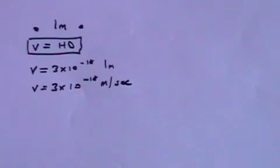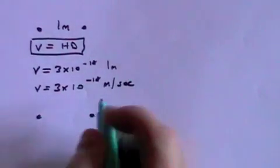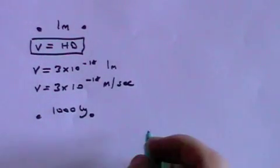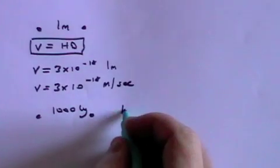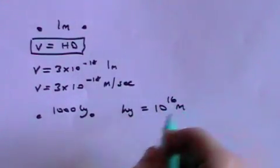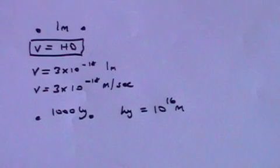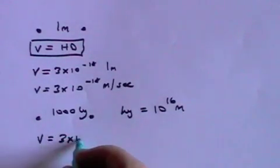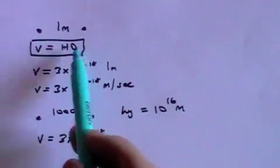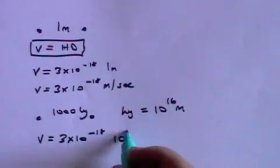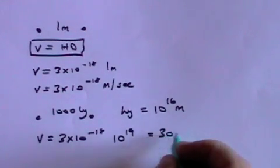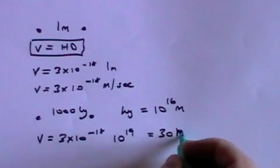But let's see if we have two points that are in fact a thousand light years apart. A light year is approximately 10 to the 16 metres so a thousand light years is 10 to the 19 metres. Now V is H which is 3 times 10 to the minus 18 times D which is 10 to the 19, a thousand light years, and that's 30 metres per second.